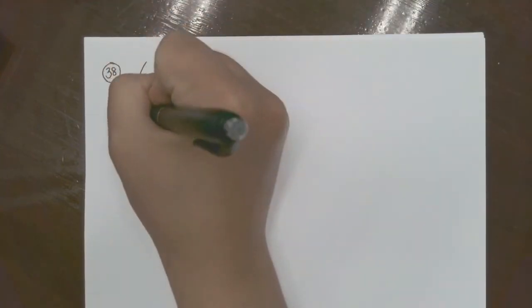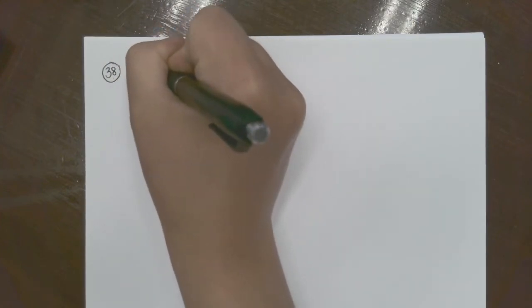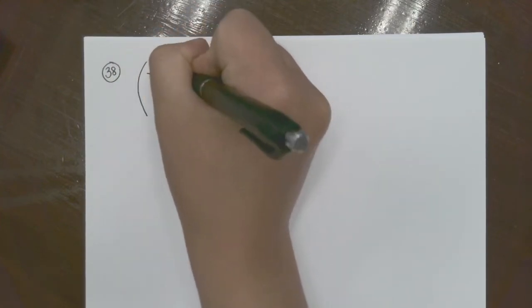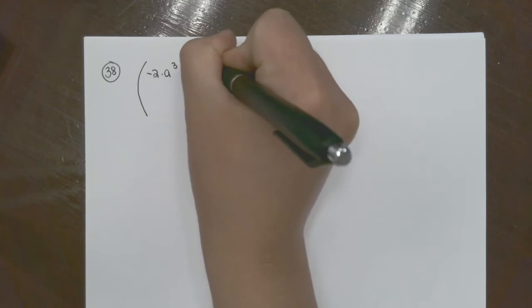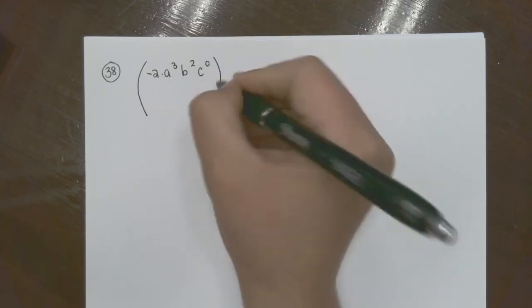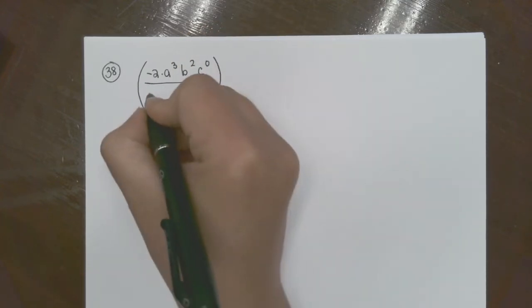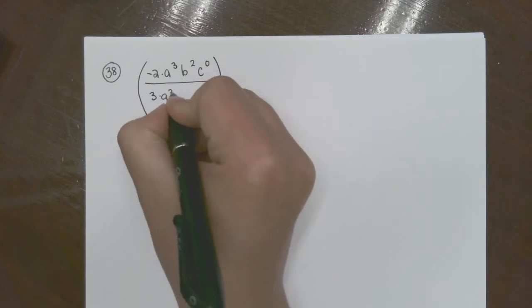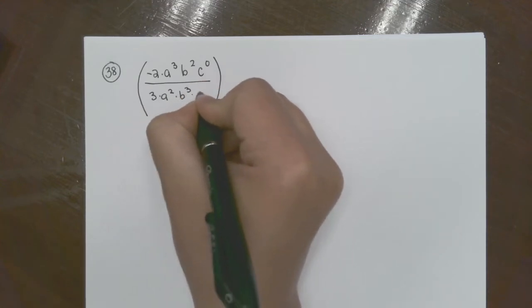Question number 38 says: all in parentheses, negative 2 times a to the third power, b to the second power, c to the zero power, all in parentheses, divided by 3 times a squared, b cubed, c to the seventh power. Now all of that is actually being raised to the negative two power.